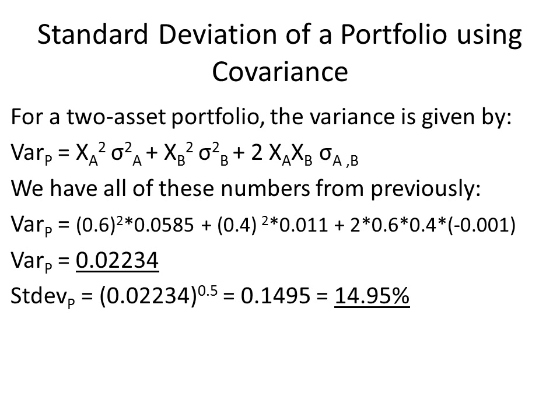Here is how we calculated the standard deviation of a two-asset portfolio in the risk and returns of portfolios video. We calculated the variance and said it was equal to the portfolio weight of component A squared times the variance of A, plus the portfolio weight of component B squared times the variance of B, plus two times the portfolio weight of A times the portfolio weight of B times the covariance of A with B.